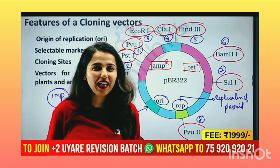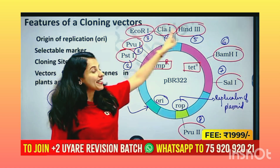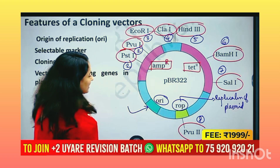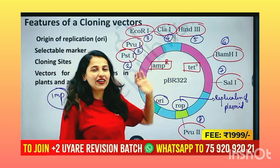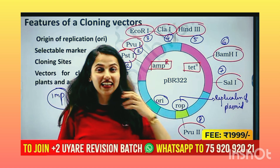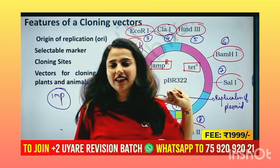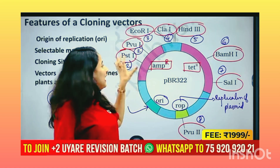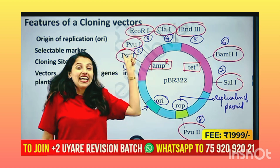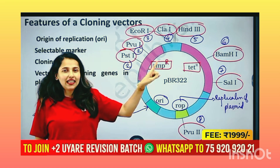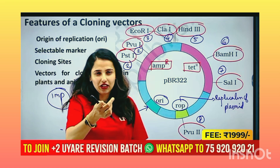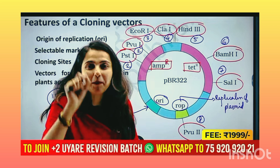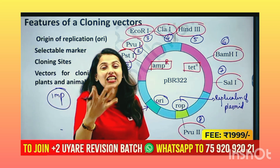How many cloning sites have you? Where are we? We have PBR320. This is the selectable marker. How many cloning sites have you?